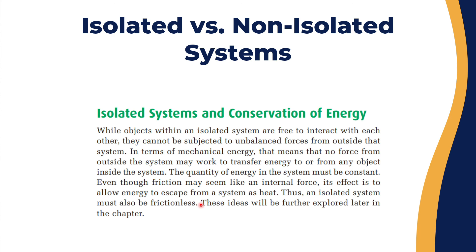We need to keep in mind that a closed system means it is a frictionless system, because friction causes a loss of energy. We consider friction as an external energy source — friction allows energy to escape as heat, the same as the brakes in your car. So an isolated system should be frictionless, and we will talk more about these ideas going forward.